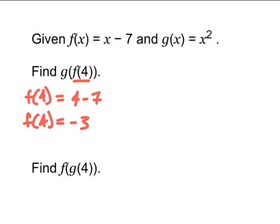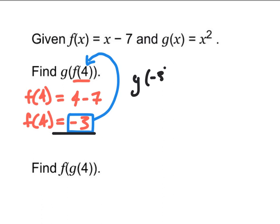Now I take that −3 and plug it into function g. Instead of g(f(4)), since f(4) = −3, I'm really finding g(−3). So that's (−3)² = positive 9. That's our answer.